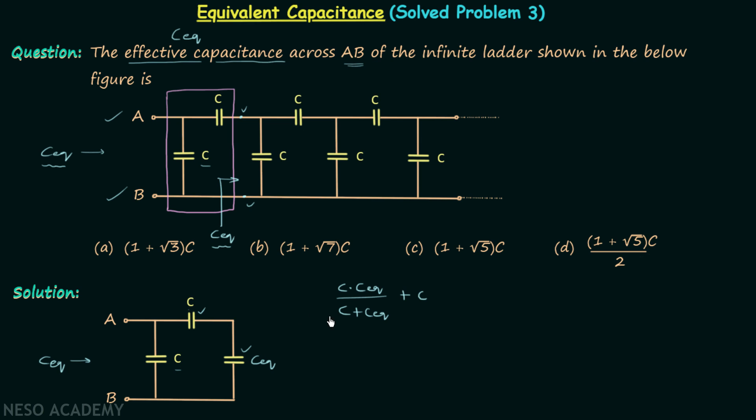Finally we will have a single capacitor having the capacitance equal to this, and this should be equal to C_eq. We can multiply C plus C_eq on both sides, giving us C_eq times (C + C_eq) equal to C times C_eq plus C times (C + C_eq).